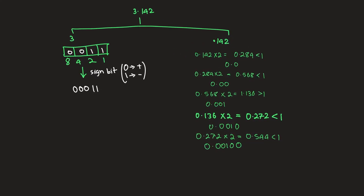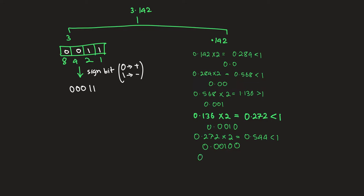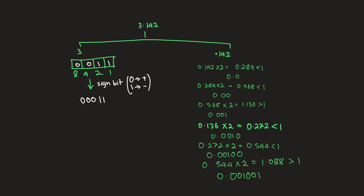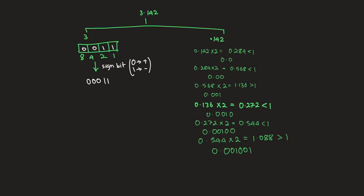We could go a little bit more further. 0.544 times 2 will give us the value 1.088. Now this is finally more than one so we'll have another 1. At this point I believe it would be okay to stop because we have reached a pretty accurate value.